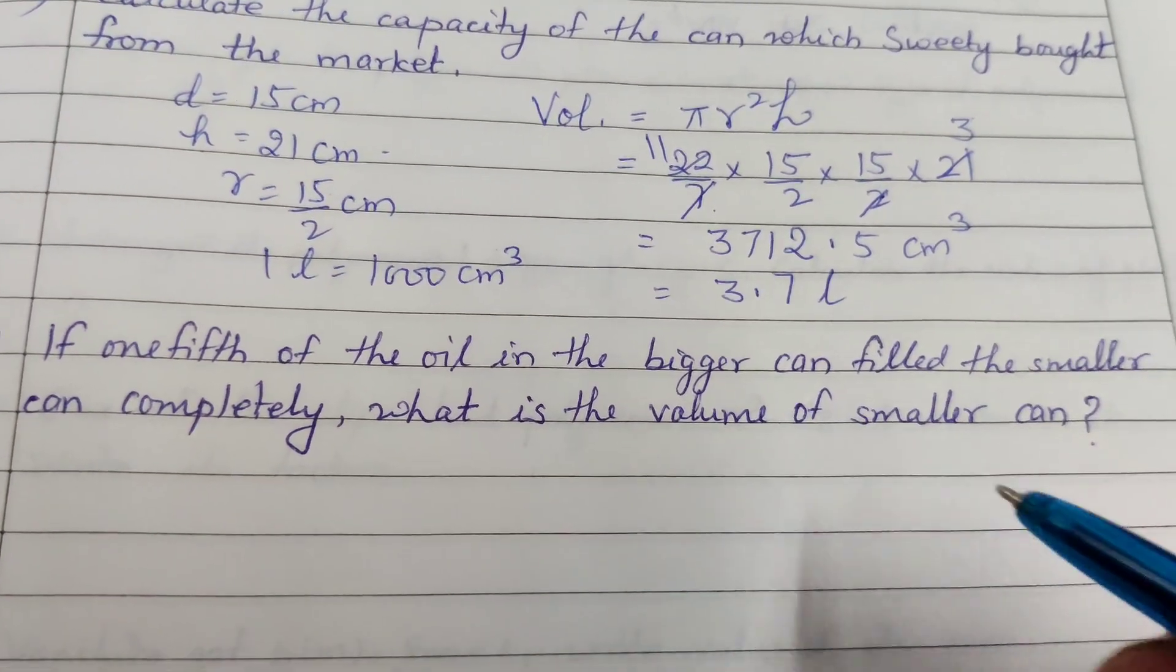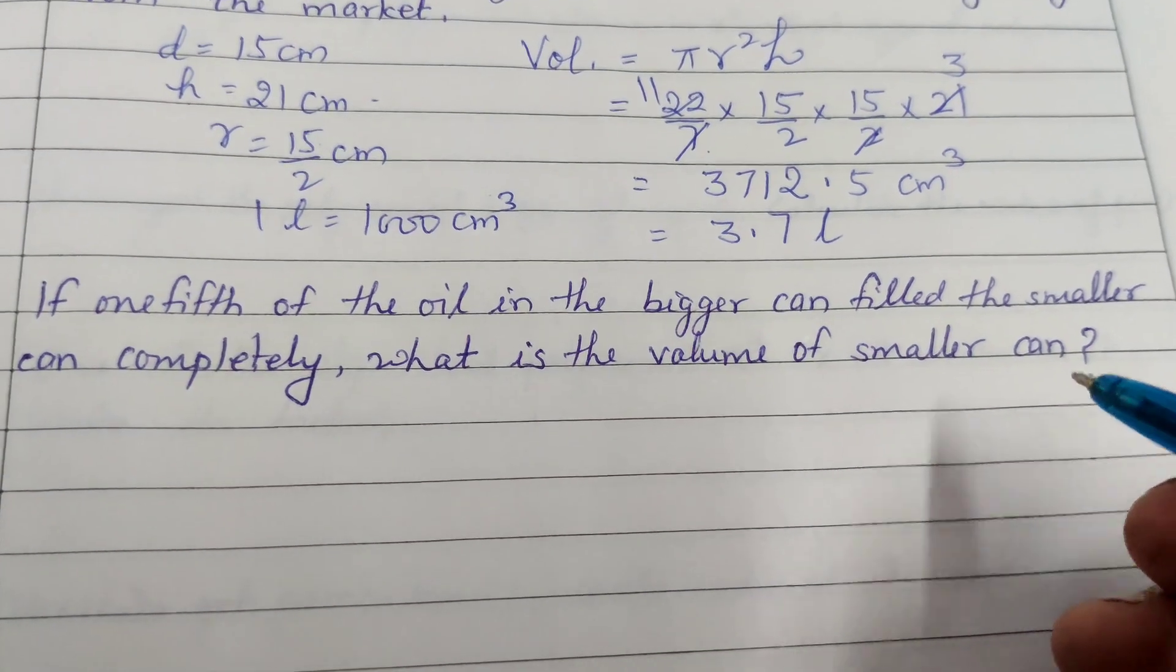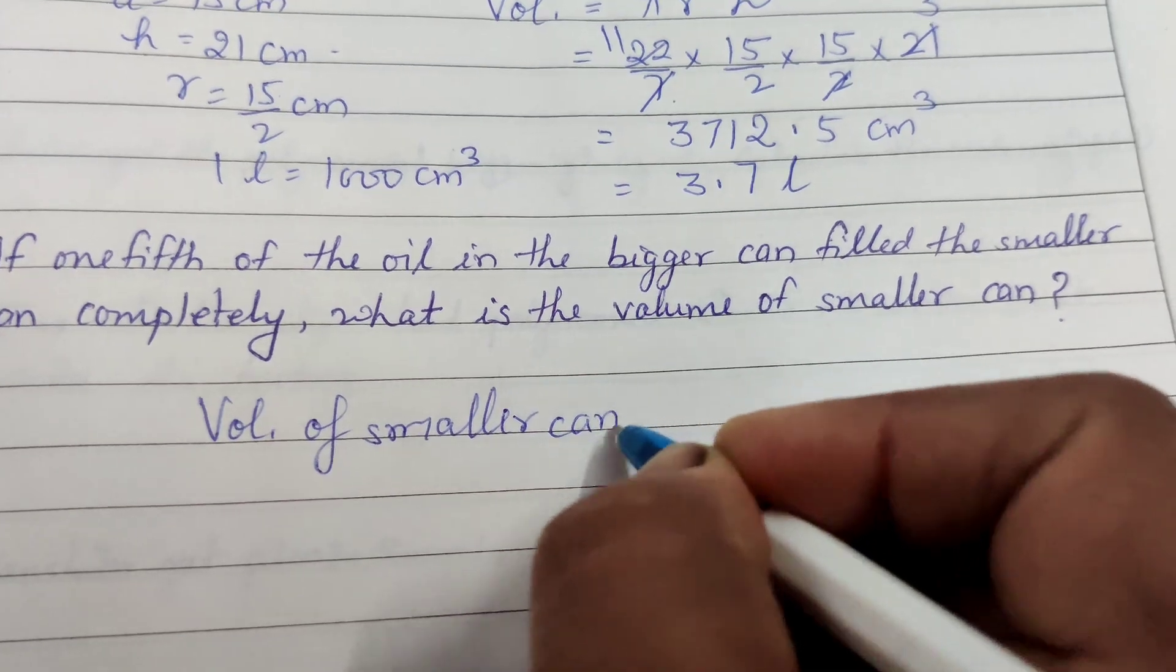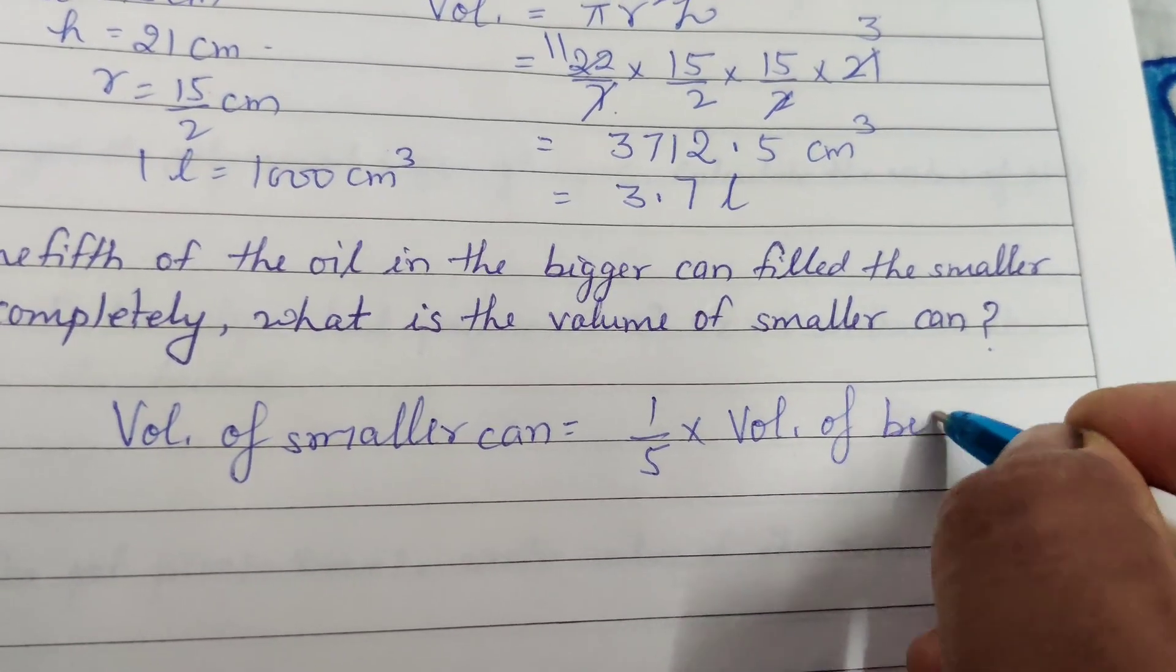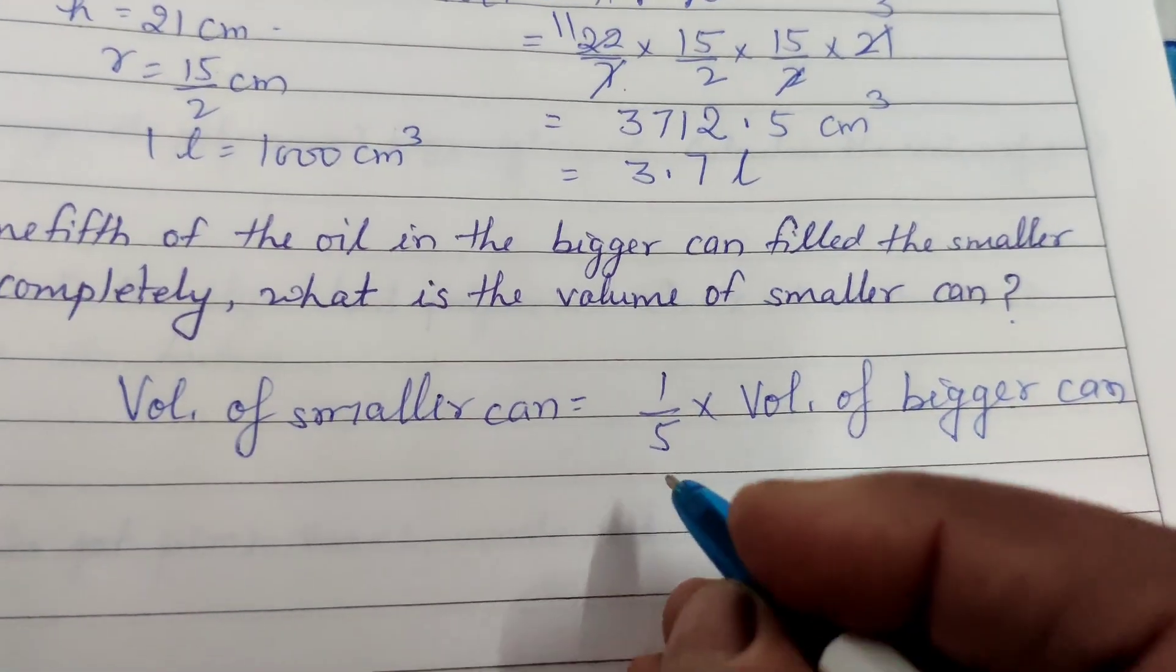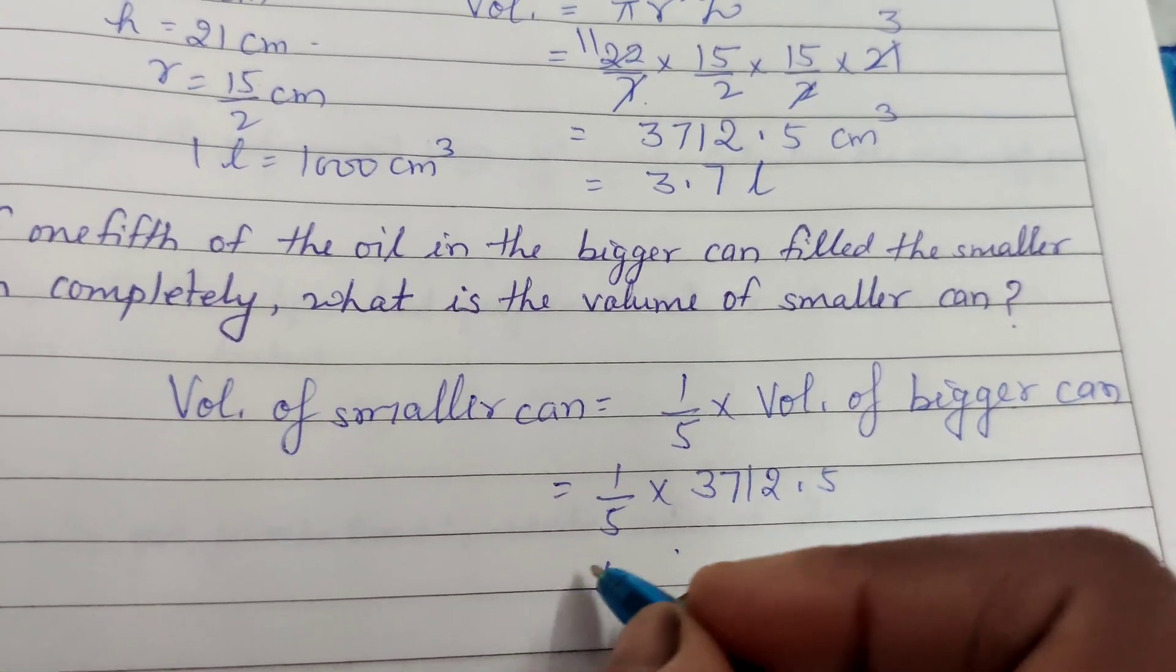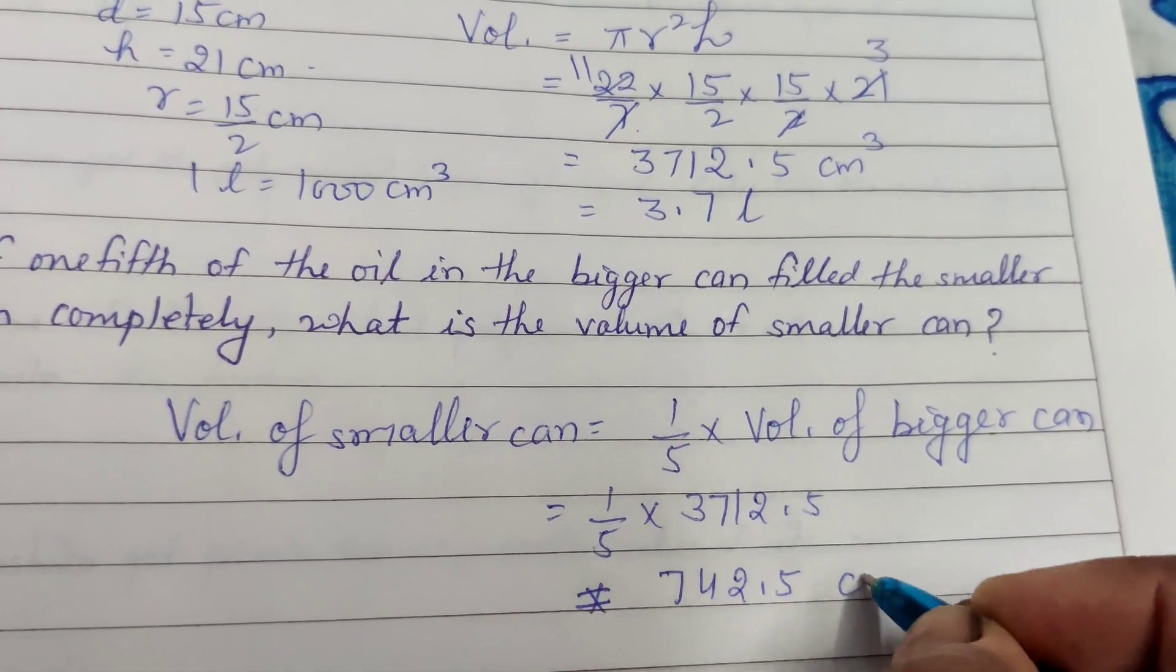Next question. If one-fifth of the oil in the bigger can filled the smaller can completely, what is the volume of smaller can? Simplifying, the volume of smaller can is one-fifth of the volume of bigger can. Volume of smaller can equal to 1 by 5 of volume of bigger can. The volume of bigger can we have now found, 3712.5. It means 1 by 5 into 3712.5 cubic centimeter. Now divide by 5, we get 742.5 cubic centimeter.